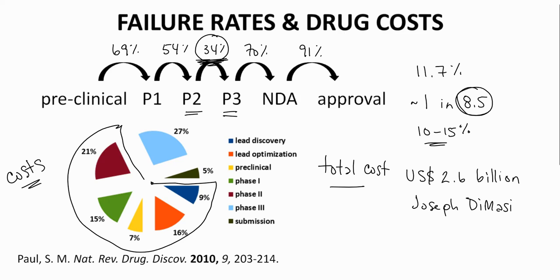If successful, such an effort would reduce the cost of developing drugs and also likely reduce the cost of drugs in the marketplace. The drug industry is aware of this opportunity, and researchers are actively working to improve predictions of human efficacy in early discovery stages. The high rate of failure of drugs in clinical trials is a serious problem for the drug industry, but this problem also represents an opportunity — an opportunity to improve the early stages of drug development so that failure rates and costs can be brought down.